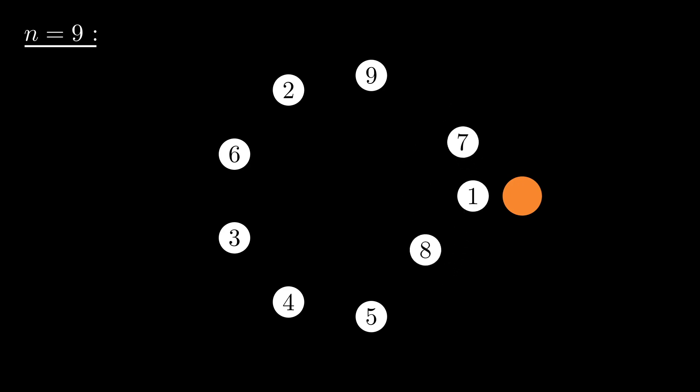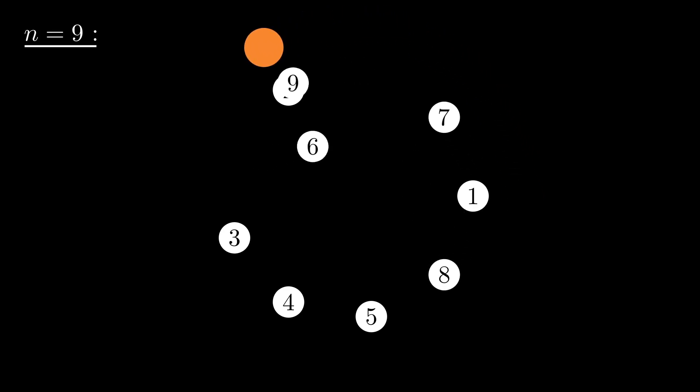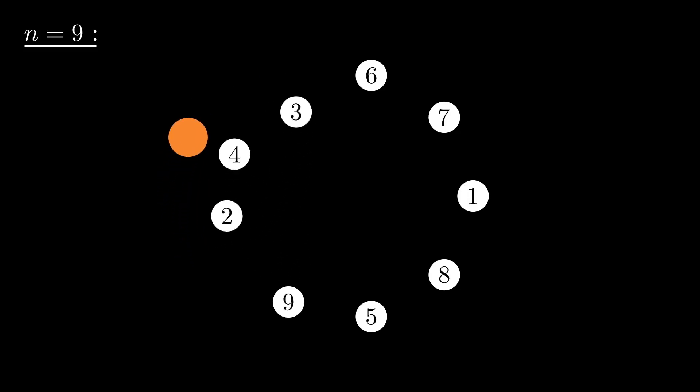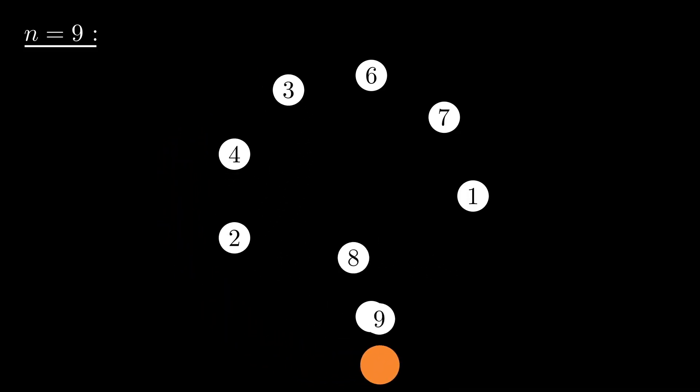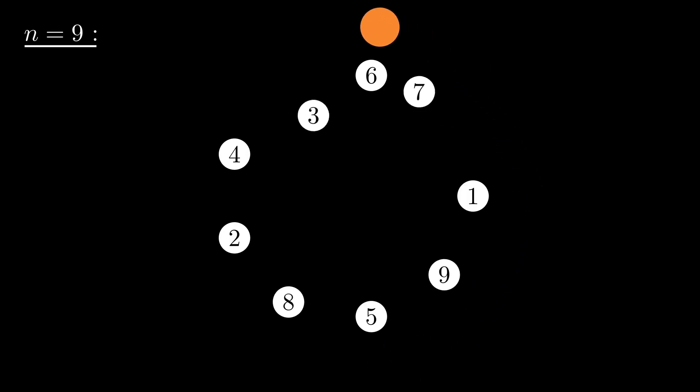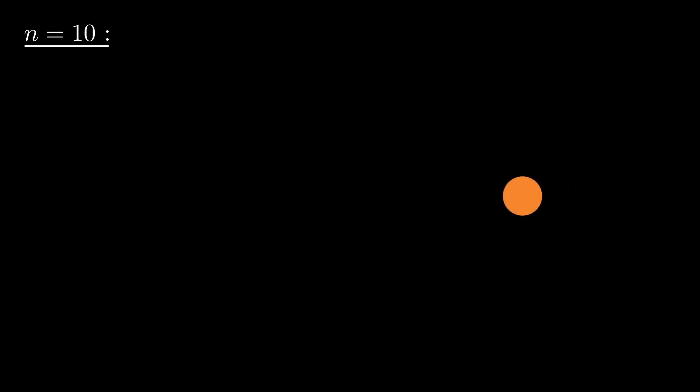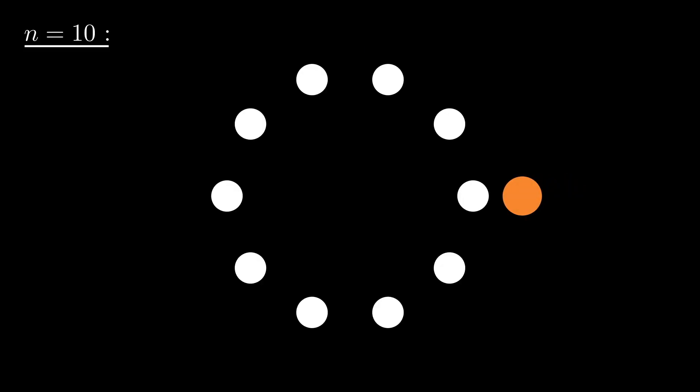You may notice that for some numbers of walnuts, you may be able to build an example where Jumpy goes through this sequence without swapping a larger and smaller walnut. See here, here's an example with 10 walnuts, and Jumpy goes through this entire sequence without ever swapping a smaller and larger walnut.